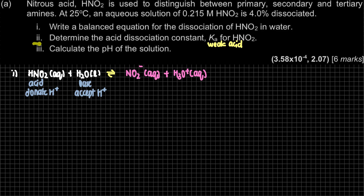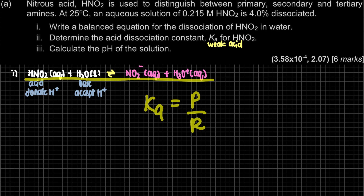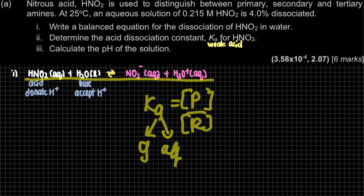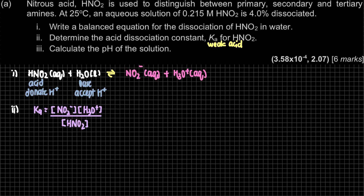Question part ii: determine the acid dissociation constant for HNO2. For a given equation, Ka is our product over reactant concentrations, but make sure these are gas or aqueous state only. So Ka equals [NO2⁻][H3O⁺] divided by [HNO2].